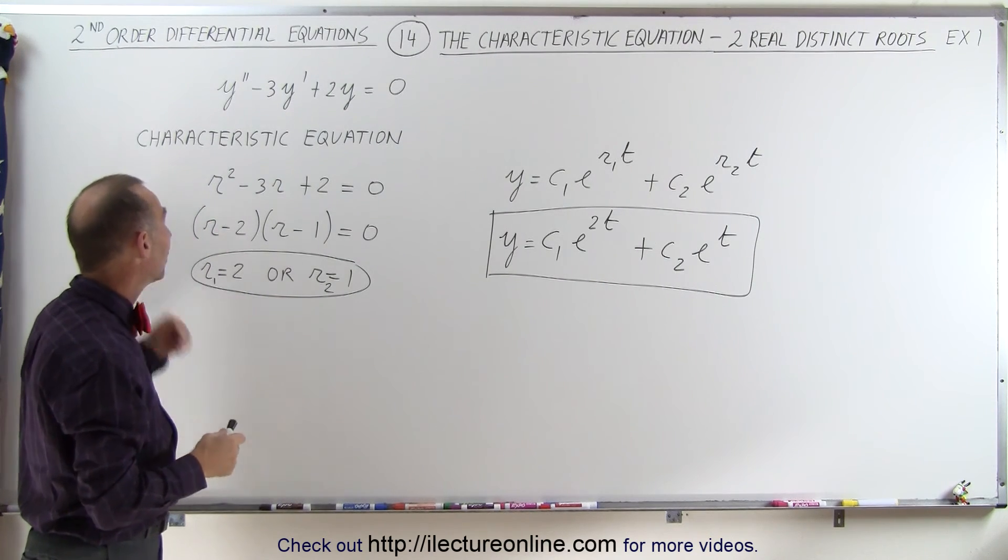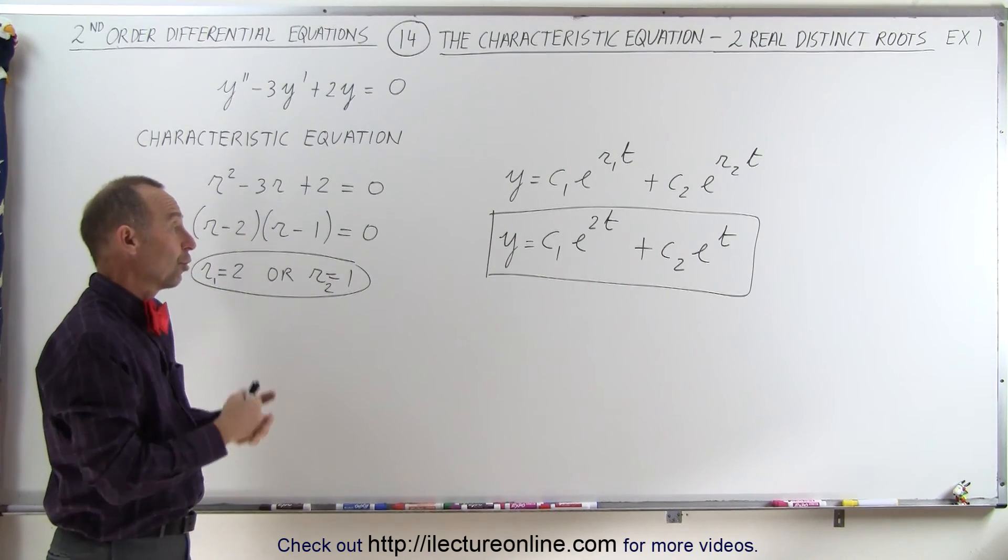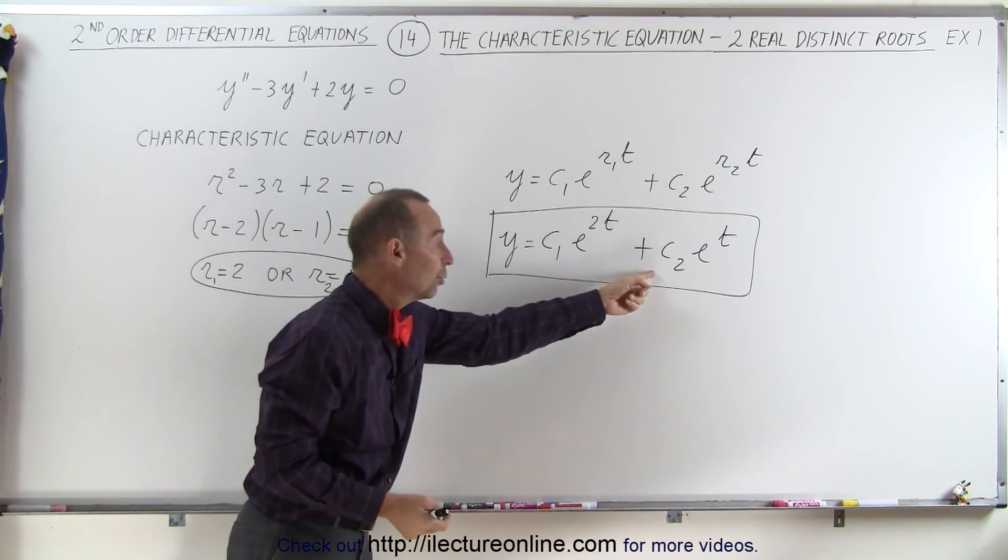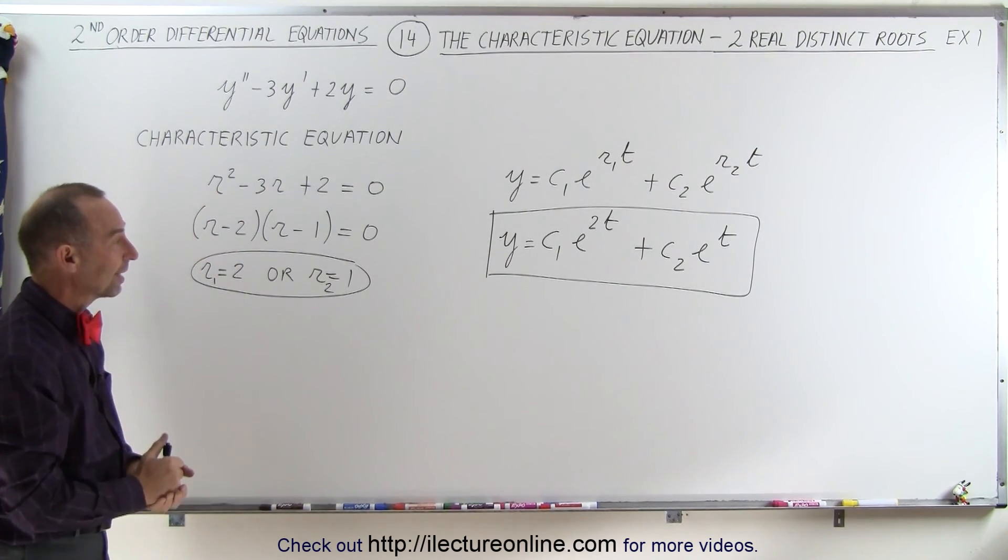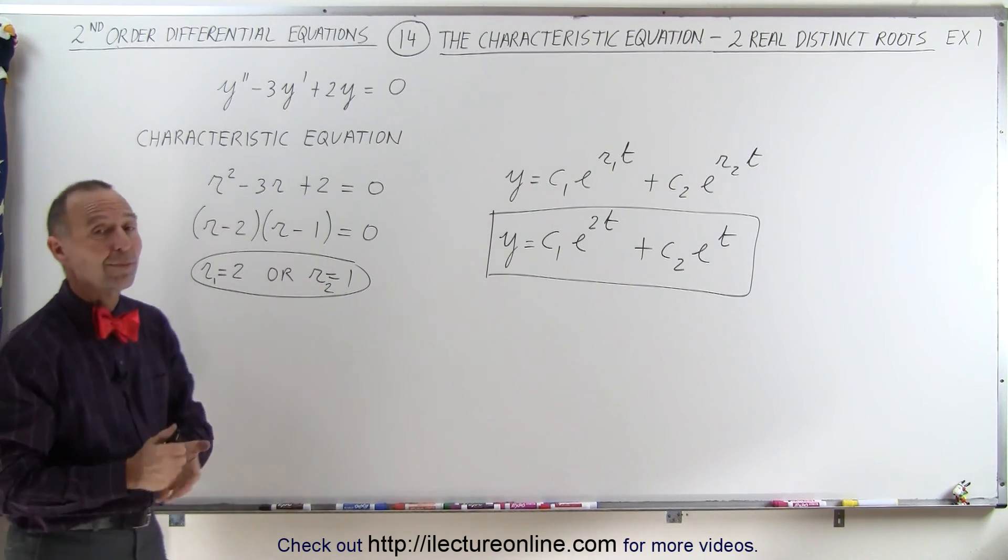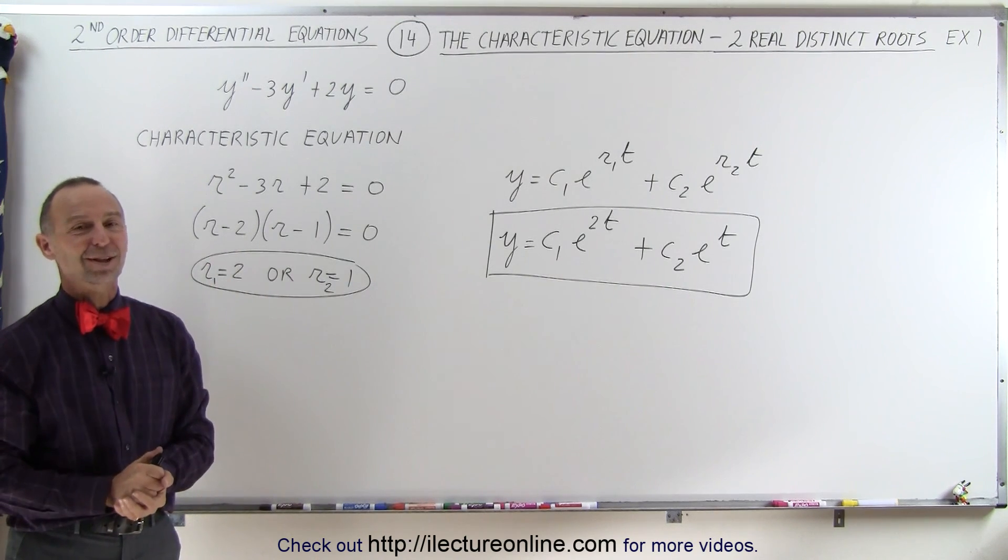Done using the characteristic equation, which makes it quite easy. Of course, the only thing left would be to find what c₁ and c₂ are, but for that we need the initial conditions, which were not given in this case. So that remains as the general solution to the differential equation. And that's how it's done.